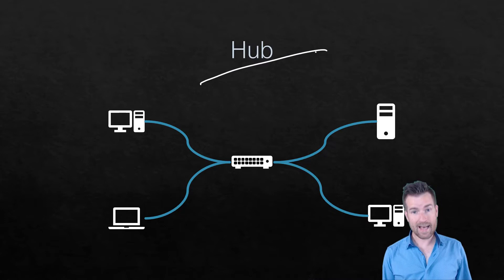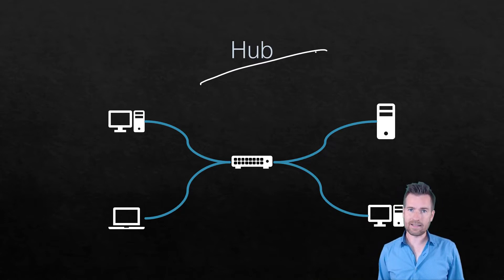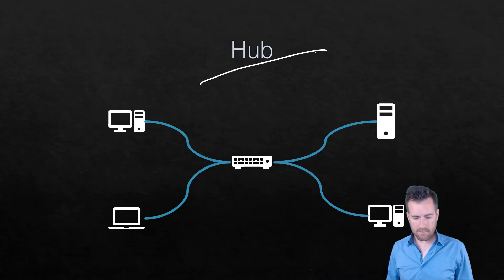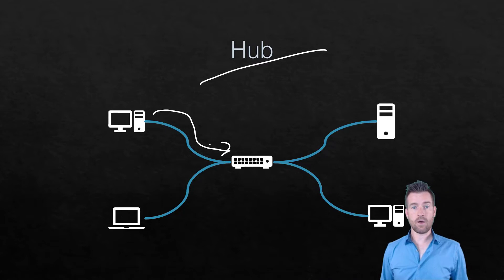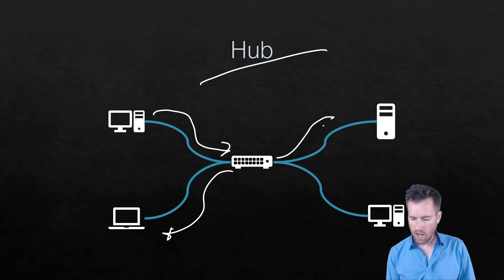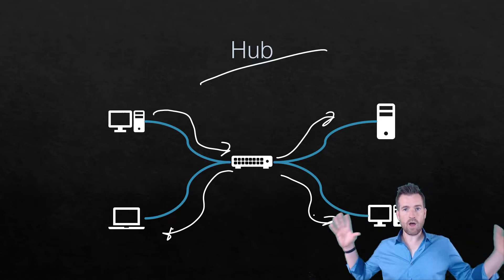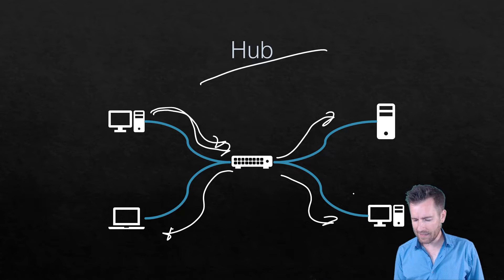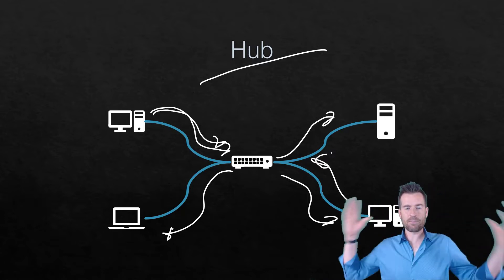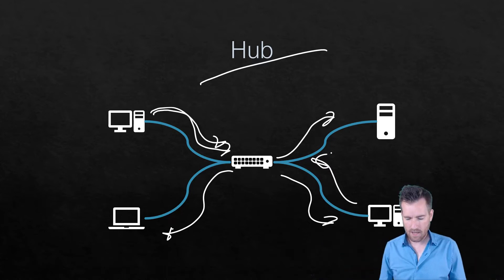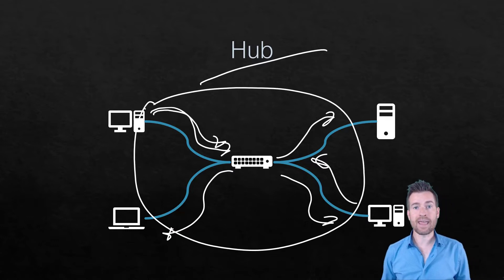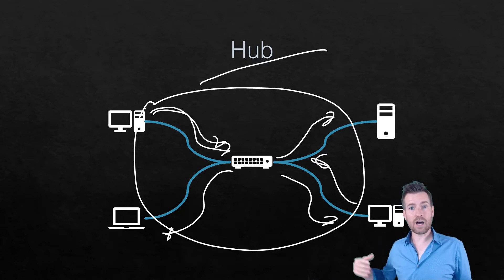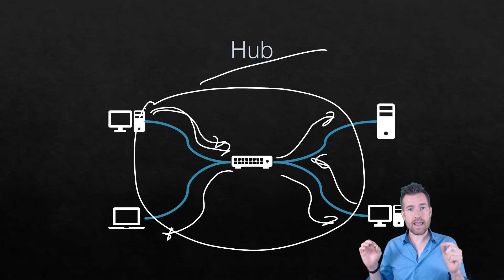Now let's talk about what a hub is. A hub is a piece of equipment that was used quite a bit a while ago, but now it's not used as much. A hub is a multi-port repeater — whatever comes into one port, it gets sent back out all other ports. The problem is if two devices talk at the same time, there's a collision. So within a hub, we consider this a collision domain. It's not ideal, which is why we've moved on to other devices.